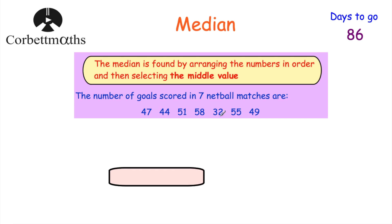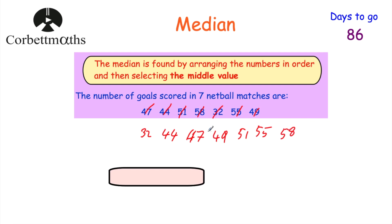If we're asked to find the median, the first thing we have to do is put them in order. So that would be 32 — that's the smallest — then 44, then 47, then 49, then 51, then 55, then 58. We've arranged our values in order from smallest to largest. Now we need to find the middle value. I like to cross off the smallest and the biggest, the next smallest and the next biggest, the next smallest and the next biggest. We're left with one in the middle, which is 49. So the median here would be 49.